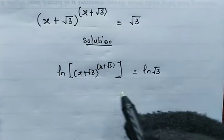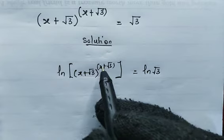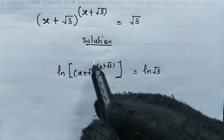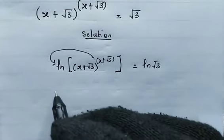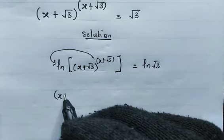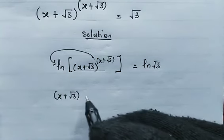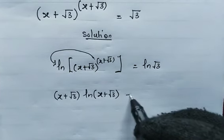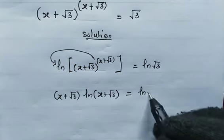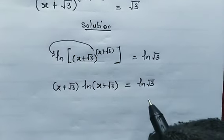Now, with the property of natural logarithm, this power here is coming over here, right? That is from here to here. And that will become x plus root 3, multiplied by the natural log of x plus root 3. And from the right, this equals the natural log of root 3.